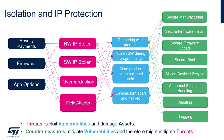Doing an analysis on John's system, we can see his assets as the firmware developed, royalty payments, and the application options that are provided. John sees hardware and software IP being stolen, overproduction, and manufacturing as threats. The vulnerabilities he is concerned about are product tampering, devices being torn apart, software being stolen, and overproduction. The STM32 Trust can provide different mitigations to address these vulnerabilities.